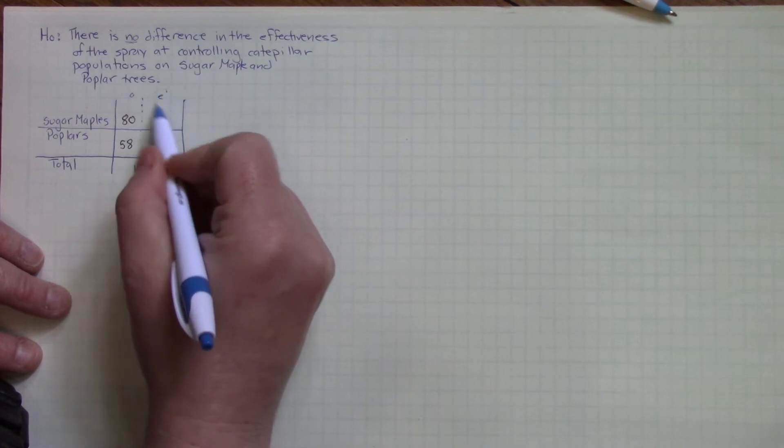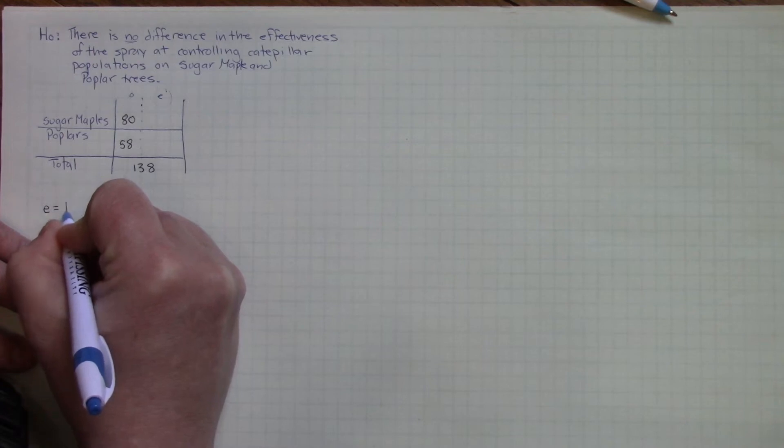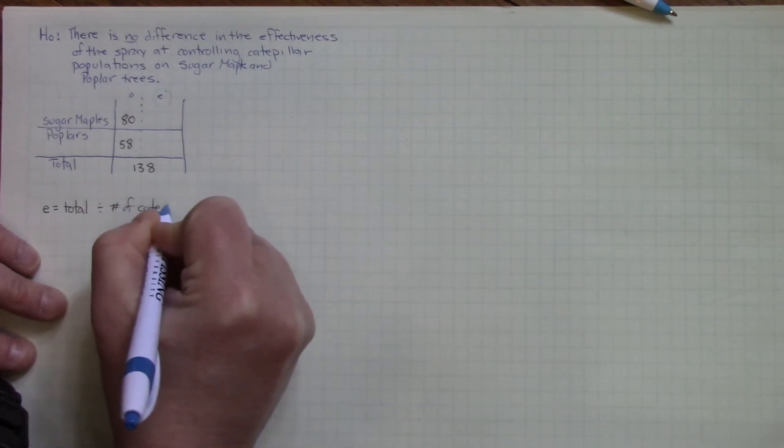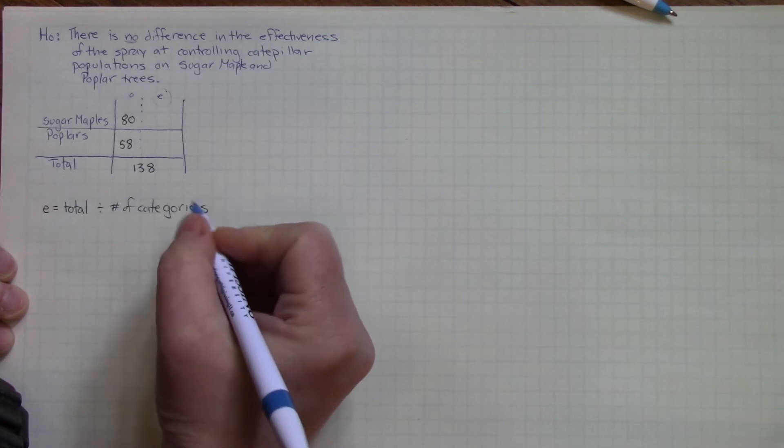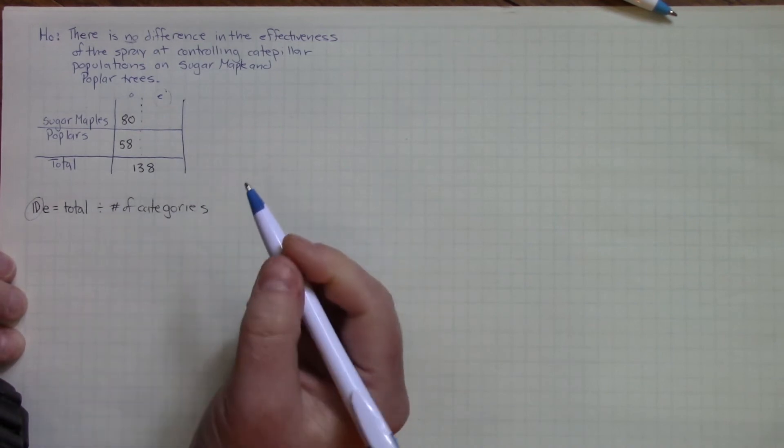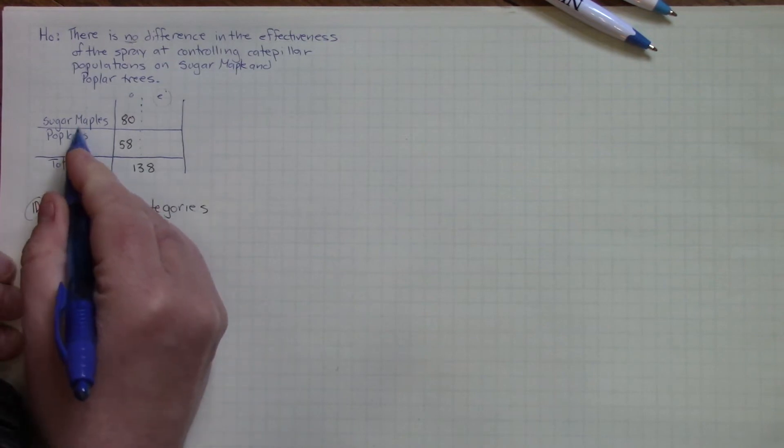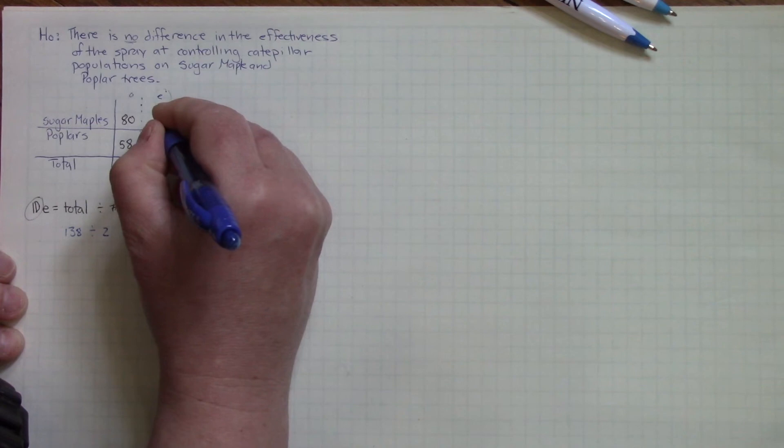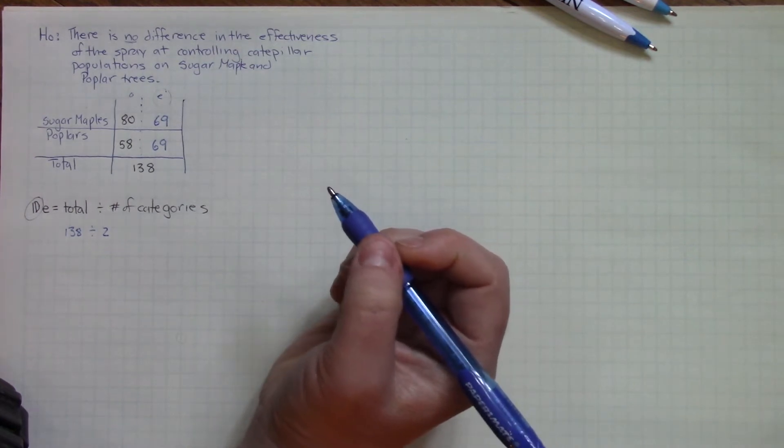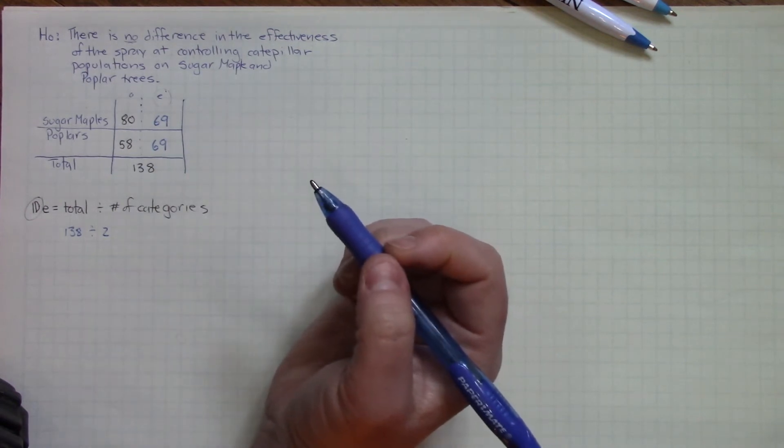The next thing we need to do is find the expected. The expected equals the total divided by the number of categories. Now remember, this is the expected for one dimensional. We are currently doing a one dimensional equation. In this case, our total is 138 and there are two categories, sugar maples and poplars, which means our expected value is 69. In the question, the manufacturer gives an expected value of 70% effectiveness, so this is very similar to what the manufacturer has recommended.